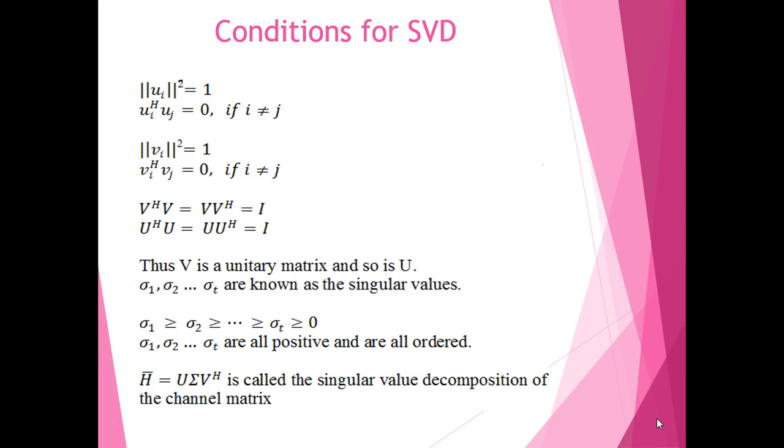Now U and V should be unit matrices. σ1, σ2, up to σT are known as the singular values and they must be ordered and positive. That is, σ1 to σT must be arranged in decreasing orders of magnitude.